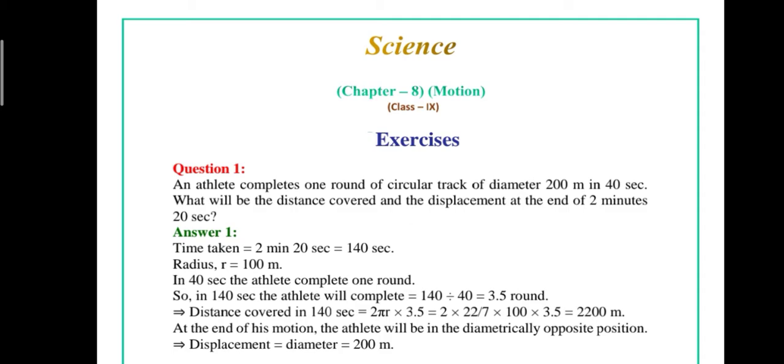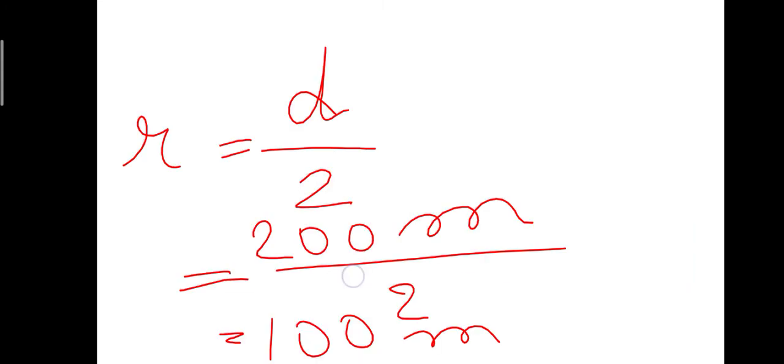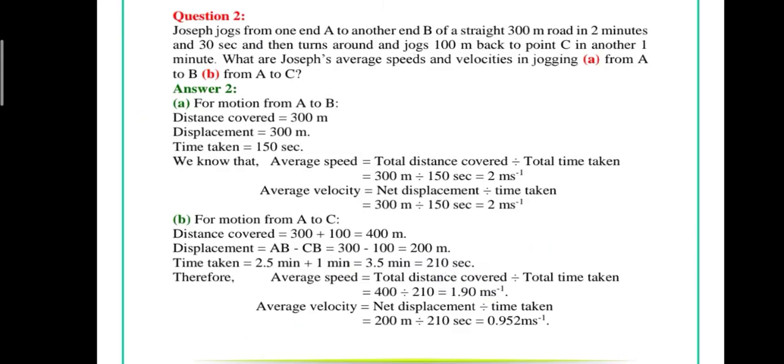At the end of his motion, the athlete will be in the diametrically opposite position. So displacement is equal to the diameter, which is equal to 200 meters. Now let's see the second question.